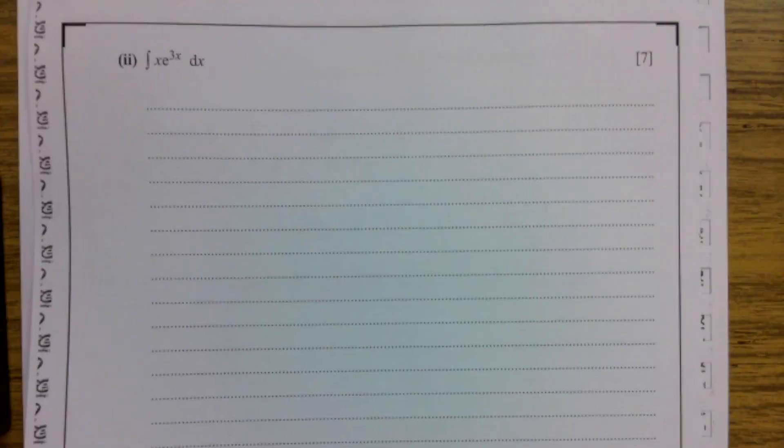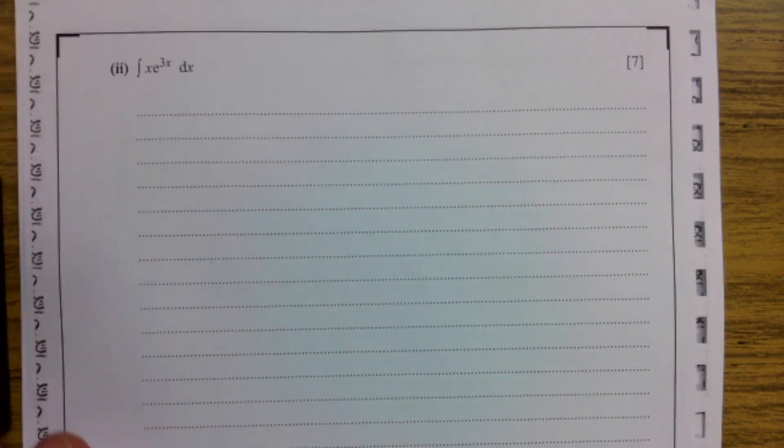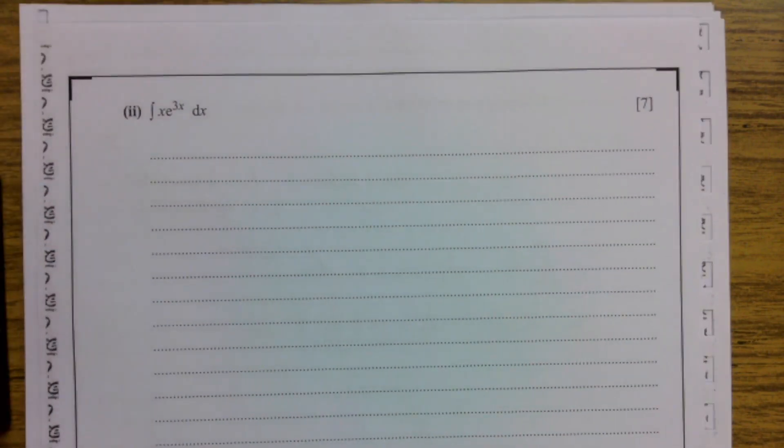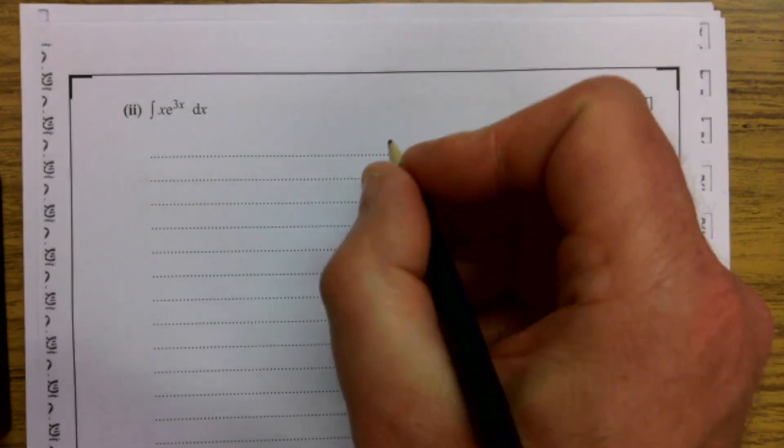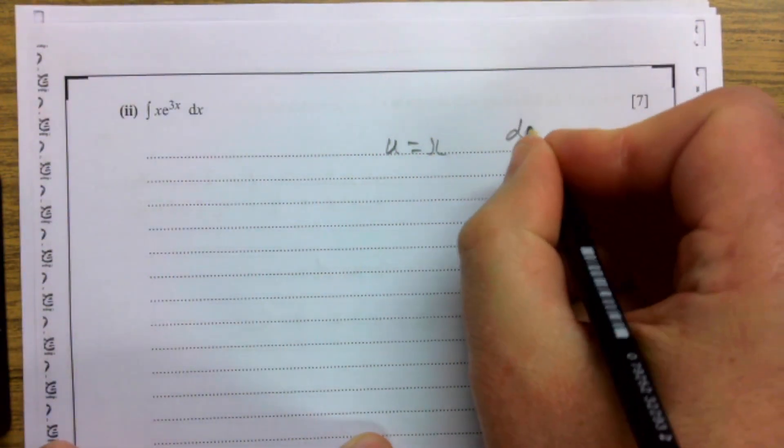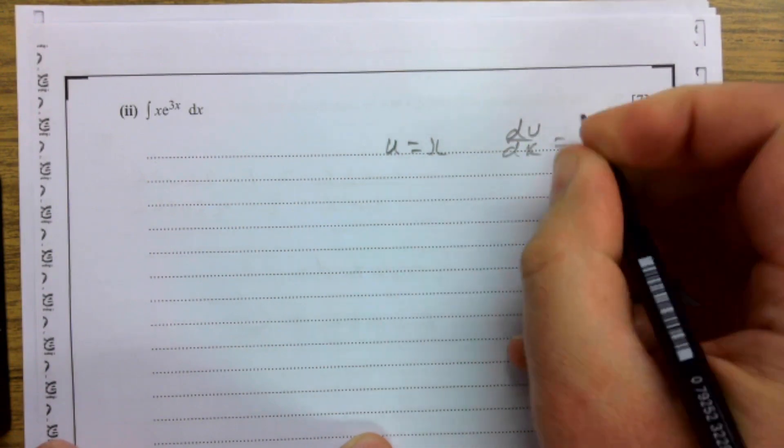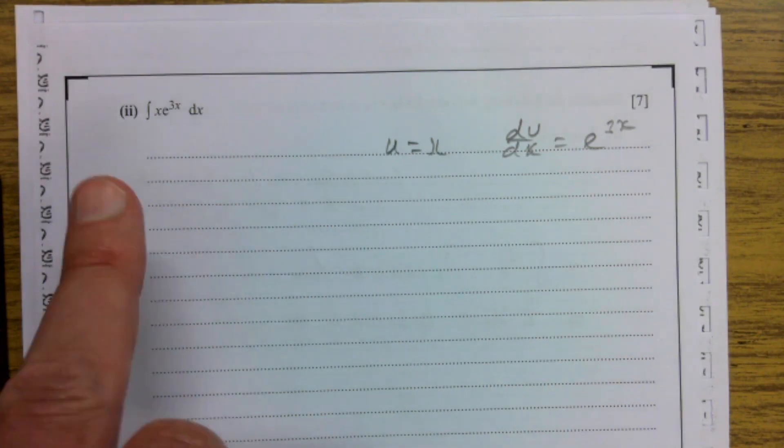Part b, the integral of x e to the 3x dx. This is an integration by parts question, and so we need to set it up in such a way. So I would write u is x, and then dv by dx is going to be e to the 3x, and we hope by using parts it gives us an easier integration to do.